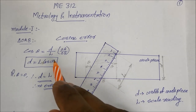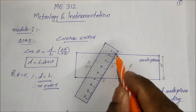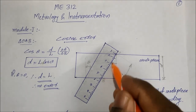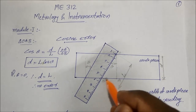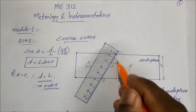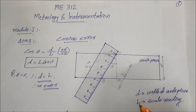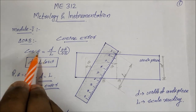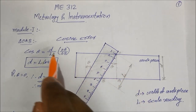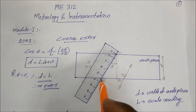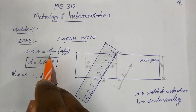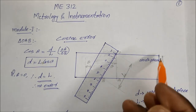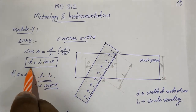At some angle theta we will have readings. Now consider triangle OAB. The actual length is d (small letter d) and the scale reading is capital L. Cos theta equals adjacent side divided by hypotenuse — that is OA divided by OB. OB means capital L. So d equals L into cos theta.